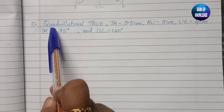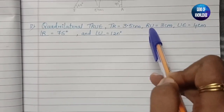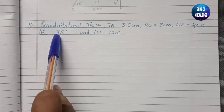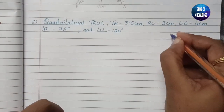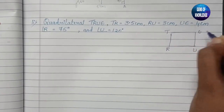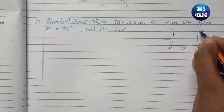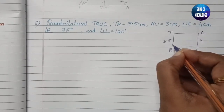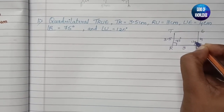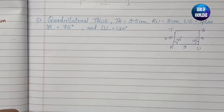Moving on to the second question: construct quadrilateral TRUE, where TR = 3.5 cm, RU = 3 cm, UE = 4 cm, angle R = 75°, and angle U = 120°. The value of TE is not given. Let us draw a rough diagram showing T, R, U, and E with these measurements before constructing it.